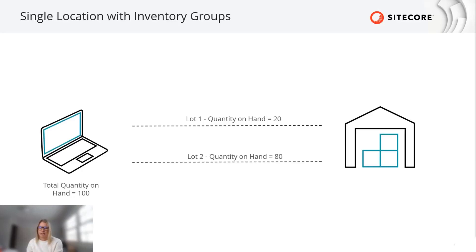My final example shows a scenario for a single fulfillment location, but within that location there are groups of inventory to support special fulfillment needs. Perhaps this laptop is manufactured in lots with lot numbers, and it's best business practice to fulfill an order so that all laptops come from the same lot. If a customer orders 50 laptops, this business could set up logic to fulfill the full order of 50 from lot 2, since lot 1 doesn't have enough available.